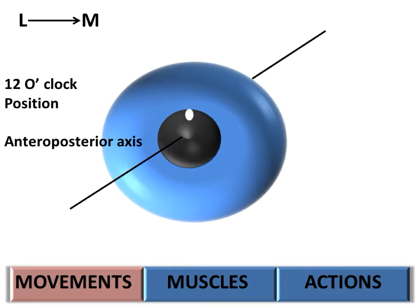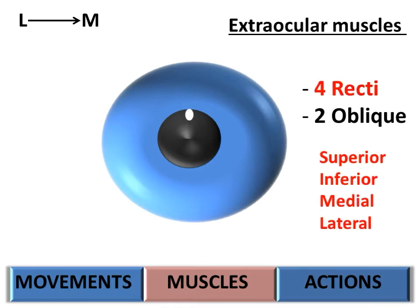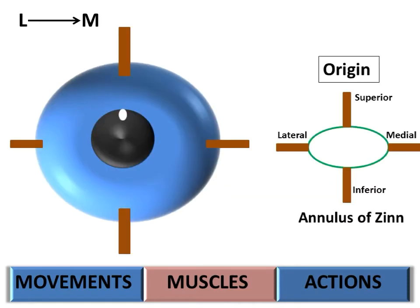These movements of the eyeball are brought about by a set of extraocular muscles. These extraocular muscles are four recti and two oblique muscles. The four recti muscles are superior, inferior, medial, and lateral, according to their origin from the annulus of Zinn, which is a connective tissue ring surrounding the optic canal and the superior orbital fissure, and these muscles insert into the sclera of the eyeball.